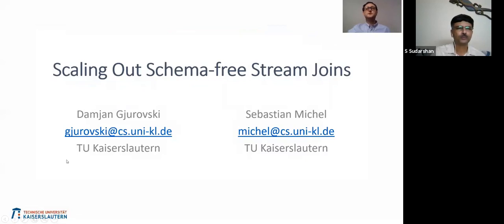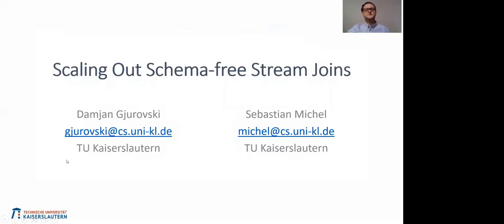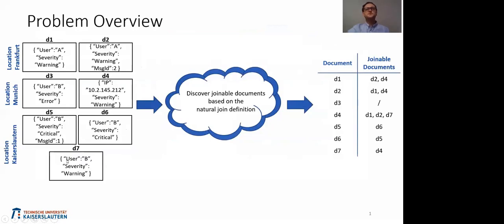Hello, my name is Damian Gierowski. Welcome to my talk for the paper scaling out schema-free stream joins. In our work, we consider computing natural joins over schema-free JSON documents where all attributes do not appear in every document and documents can have an arbitrary number of objects. We want to provide all documents that can be joined based on the natural join definition: two documents can be joined if for equal attribute names they have equal values, and if they have at least one conflicting value, they won't be in the result. Document D1 is joinable with D2 and D4, but not D3 due to a conflicting user attribute value.